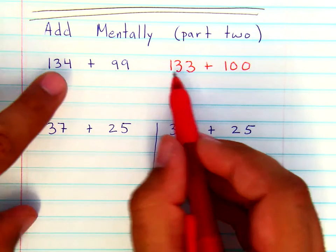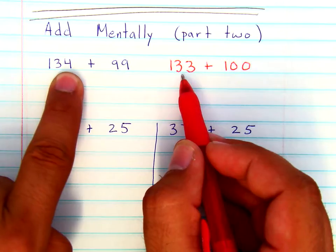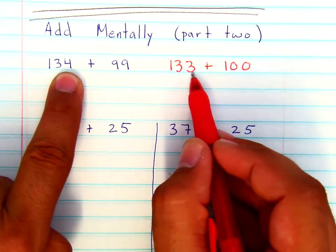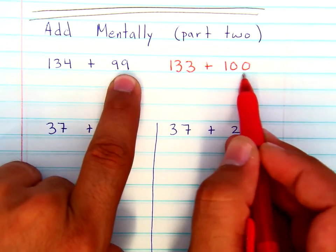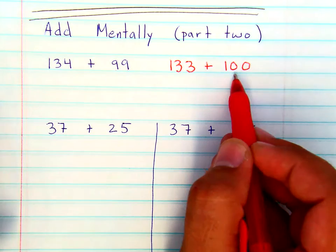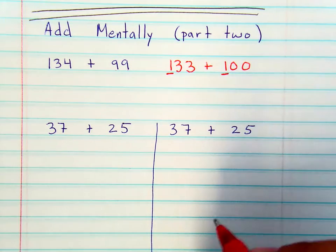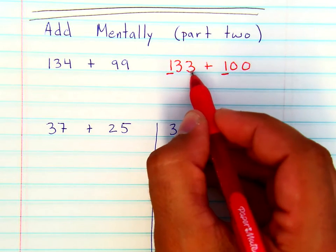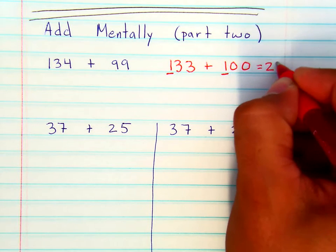Notice I've taken 1 from 134 to make it 133, and I've given 99 that extra 1. So it's the same amount, just written differently and easier to add. So now you're only adding the hundreds. 133 plus 100 is 233.